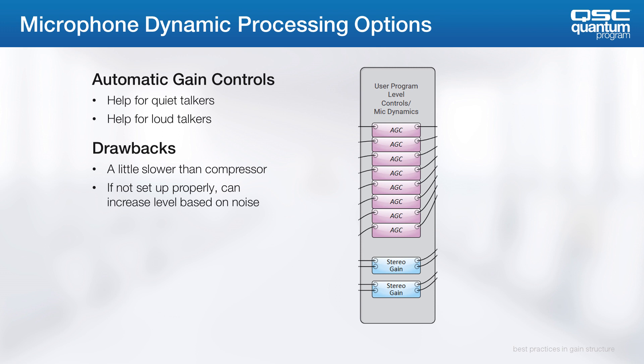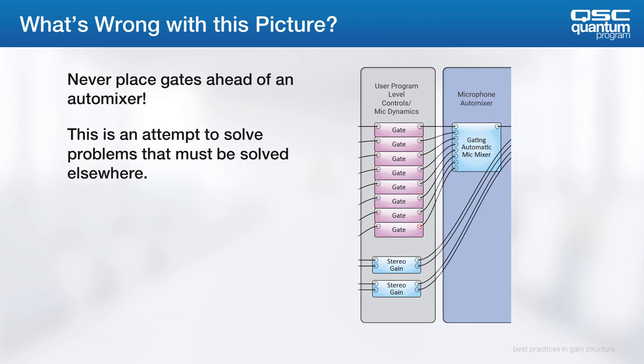For example, in most cases, a user can tune out constant static noise. But if the AGC is bringing noise up and down in volume, it gets harder for the user to ignore that issue. Sometimes, in noisier installations, you might be tempted to put a noise gate before the automixer. Do not ever do this! This is a common attempt to solve a problem that should really be solved elsewhere.